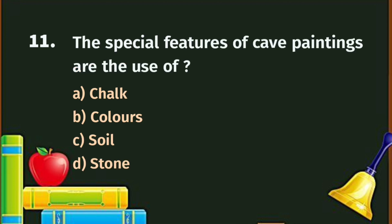Question number 11. The special features of cave paintings are the use of: A. Chalk, B. Colors, C. Soil, D. Brush. Option A is not possible as chalk was not available then. The correct answer is B - Colors. Early humans used natural colors to make cave paintings, like those at Ajanta and Ellora.